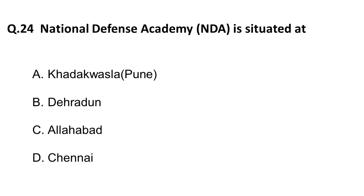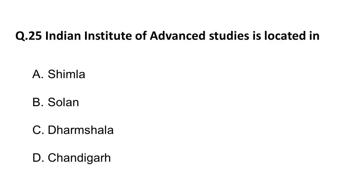The next four or five questions will be on institutes of national importance and their locations. The 24th question: National Defense Academy is situated at — options are A) Khadakwasla, Pune, B) Dehradun, C) Allahabad, D) Chennai. The correct answer is Khadakwasla, Pune. The Indian Institute of Advanced Studies is located in — options are A) Shimla, B) Solan, C) Dharamshala, D) Chandigarh. The correct answer is Shimla.